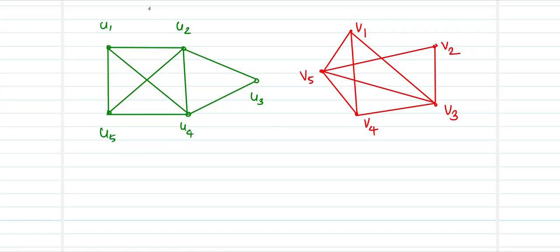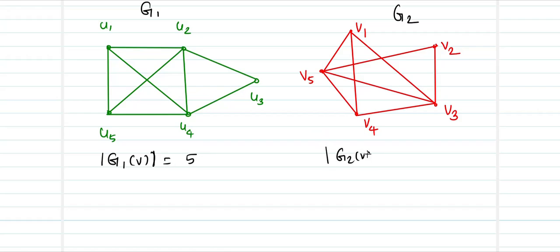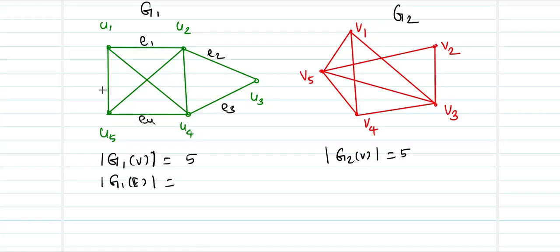Let this be G1 and this be G2. First, the cardinality of G1's vertex set is 5, and G2 also has 5 vertices. The number of edges in G1 is 8 — labeled E1 through E8.